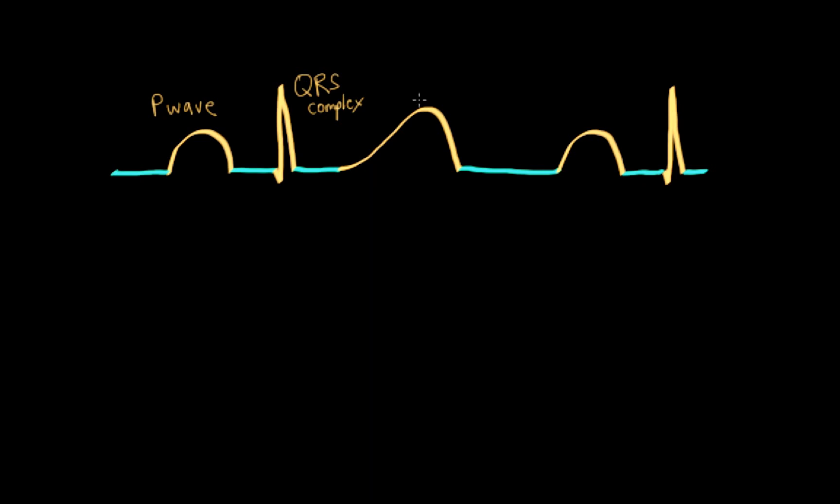When you have an initial negative deflection for the QRS complex, that's called a Q wave. Positive deflections are called R waves, and negative deflections following the R waves are called S waves.